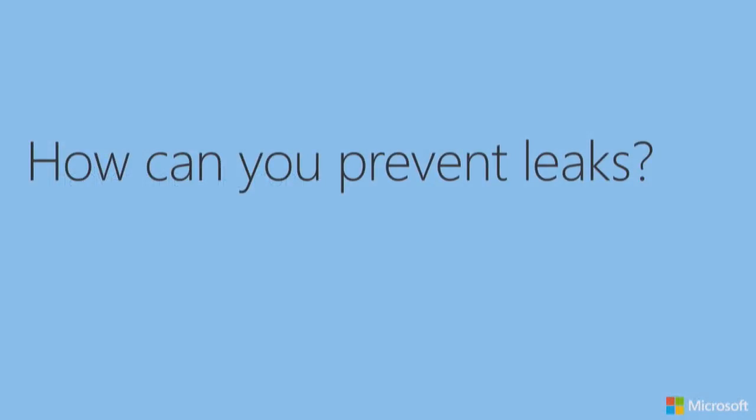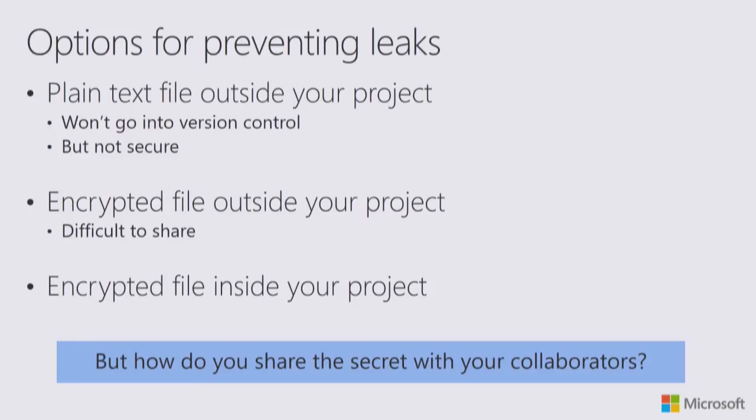What can you do to prevent that? Some obvious ways would be to store your secrets in a text file outside of your project, so at least it doesn't get checked into version control — though it's not very secure. You could decrypt your secrets into a file somewhere on your hard drive; that works, but it's difficult to share with collaborators. The best way is to actually encrypt your secrets and store them directly in your project, so you can share that with the people you need to work with. But the question is: how do you do that from R in a very easy way?